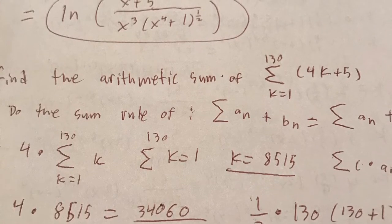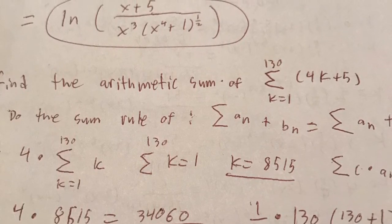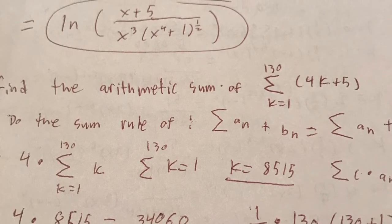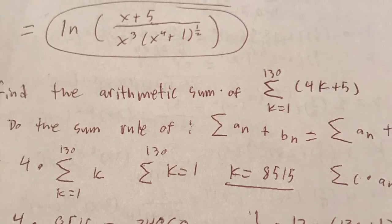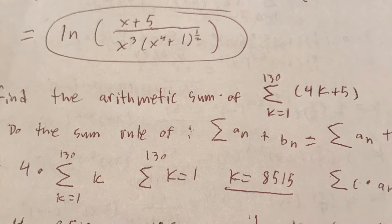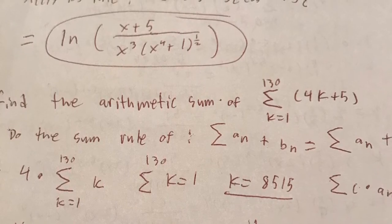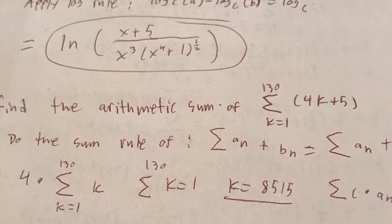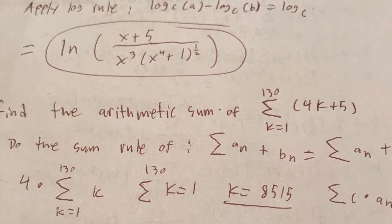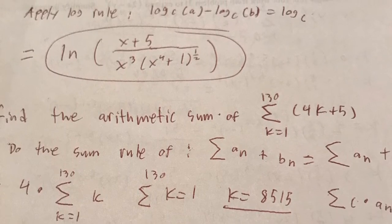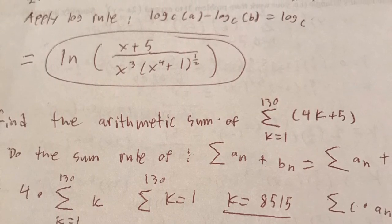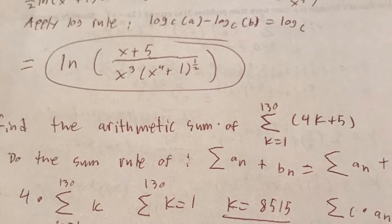Hi, I will be doing problem number 8 for my extra credit assignment for Math 1050. First we have our problem and we are going to find the arithmetic sum from k equals 1 to 130 of 4k plus 5.